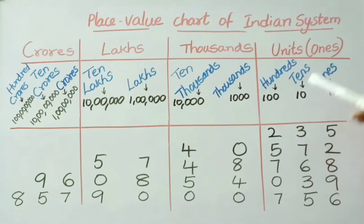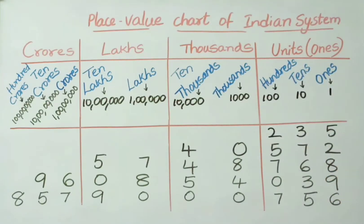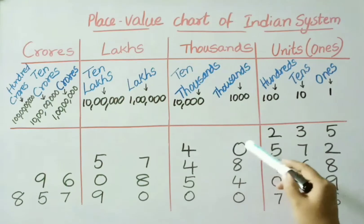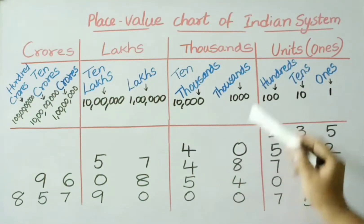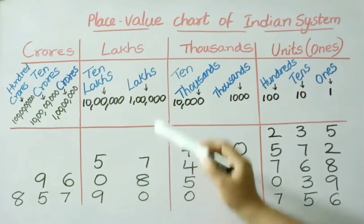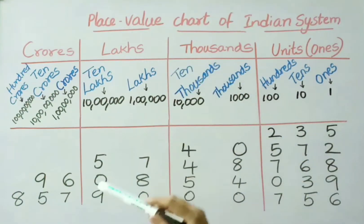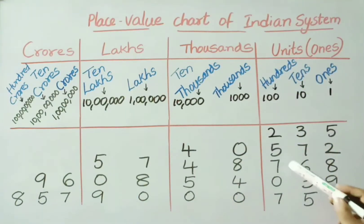Hundreds place: 2 is there; tens place: 3; ones place: 5. So the number is two hundred thirty-five. See next — four is present under the thousands period, so read the number: forty thousand five hundred seventy-two. Next, five and seven are present under the lakhs period, so fifty-seven lakhs, forty-eight thousand, seven hundred sixty-eight.